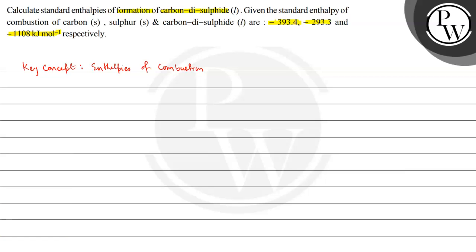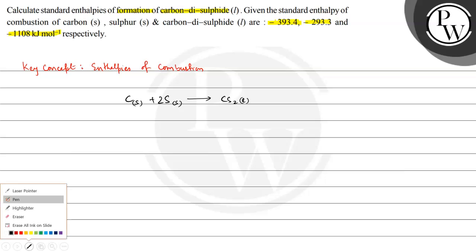Here we have to find out the formation of carbon disulfide. We can write the chemical equation for the formation of carbon disulfide as: C(s) + 2S(s) → CS₂(l). We need to find the enthalpy of this reaction.